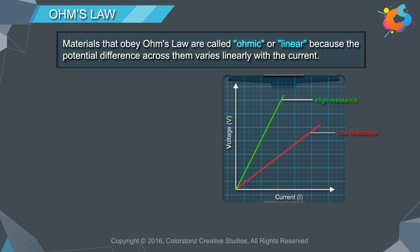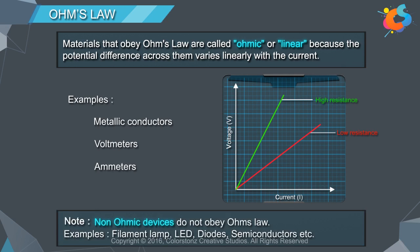Materials that obey Ohm's Law are called ohmic or linear because the potential difference across them varies linearly with the current. Examples include metallic conductors, voltmeters, and ammeters. Non-ohmic devices do not obey Ohm's Law. Examples are filament lamps, LEDs, diodes, semiconductors, etc.